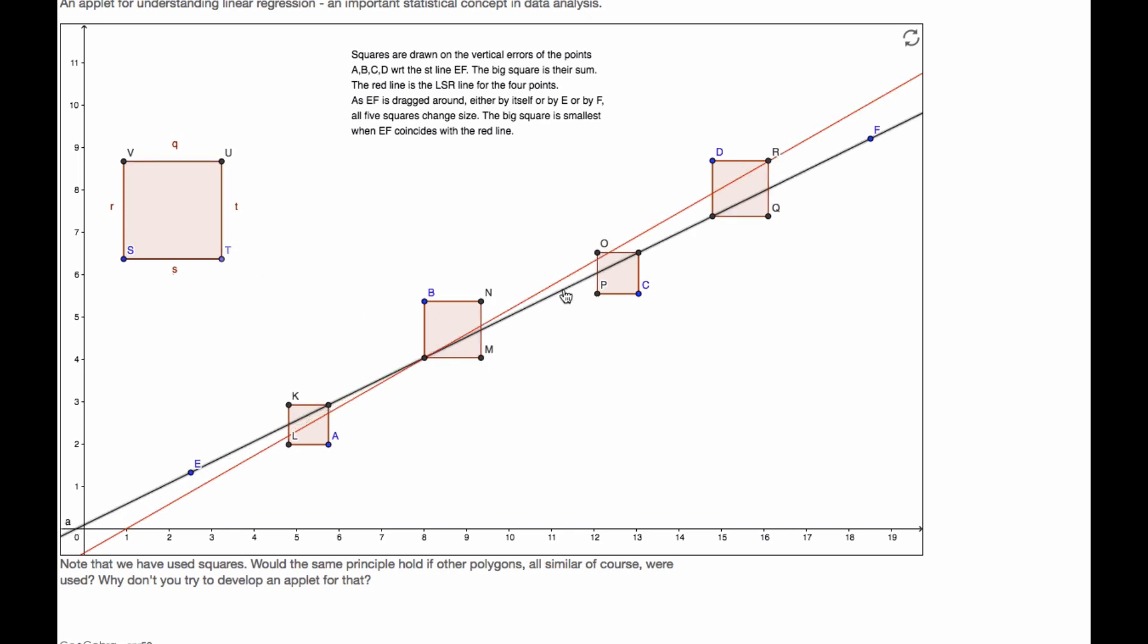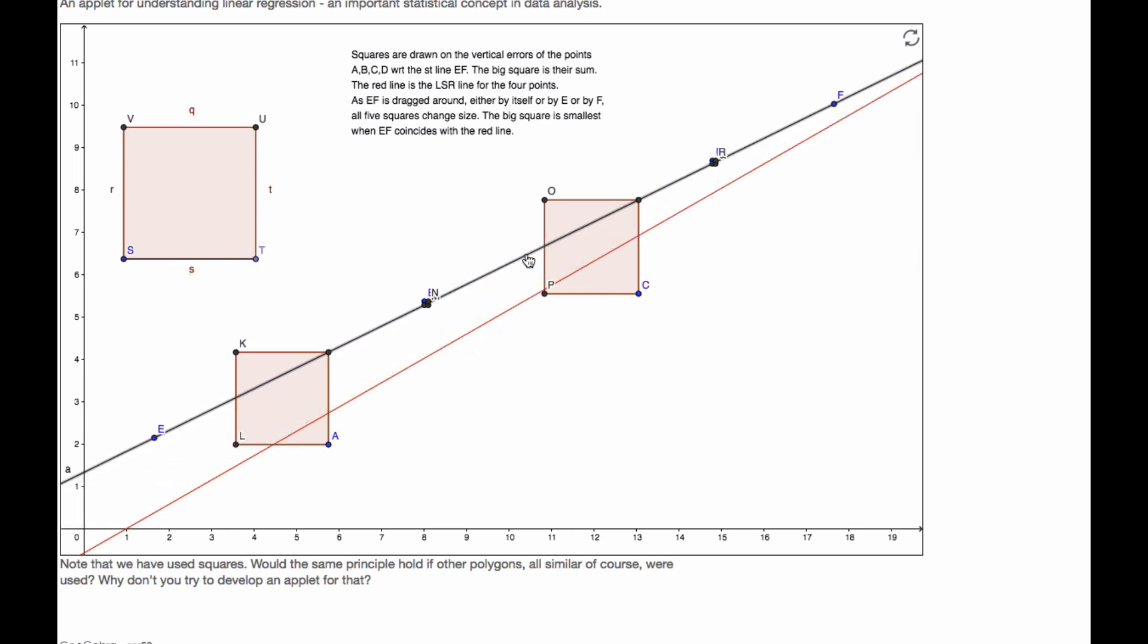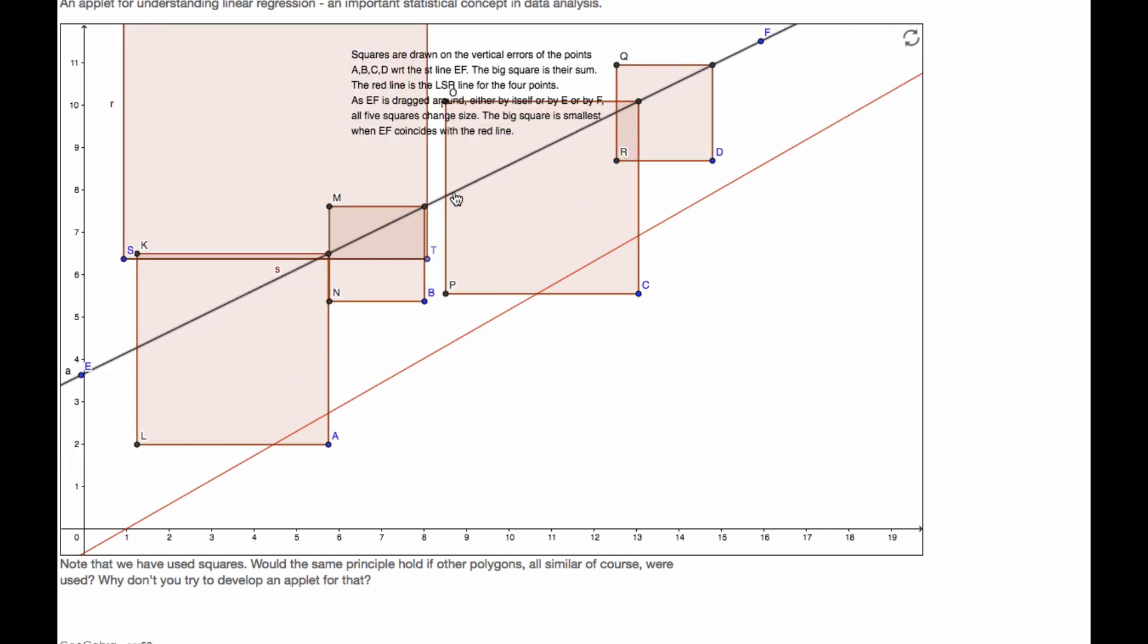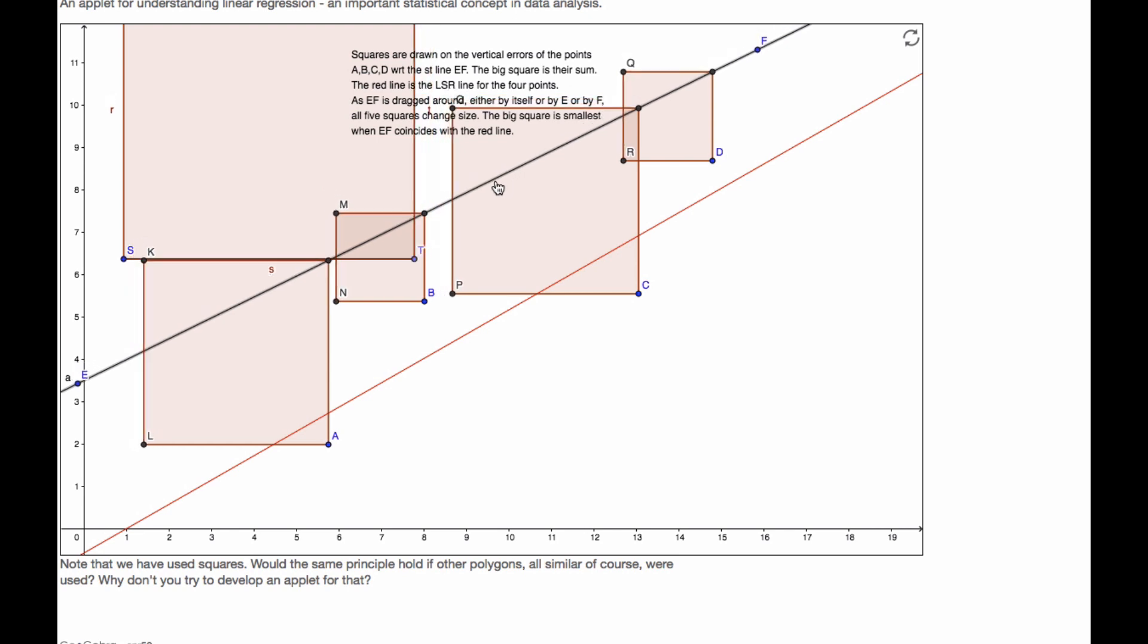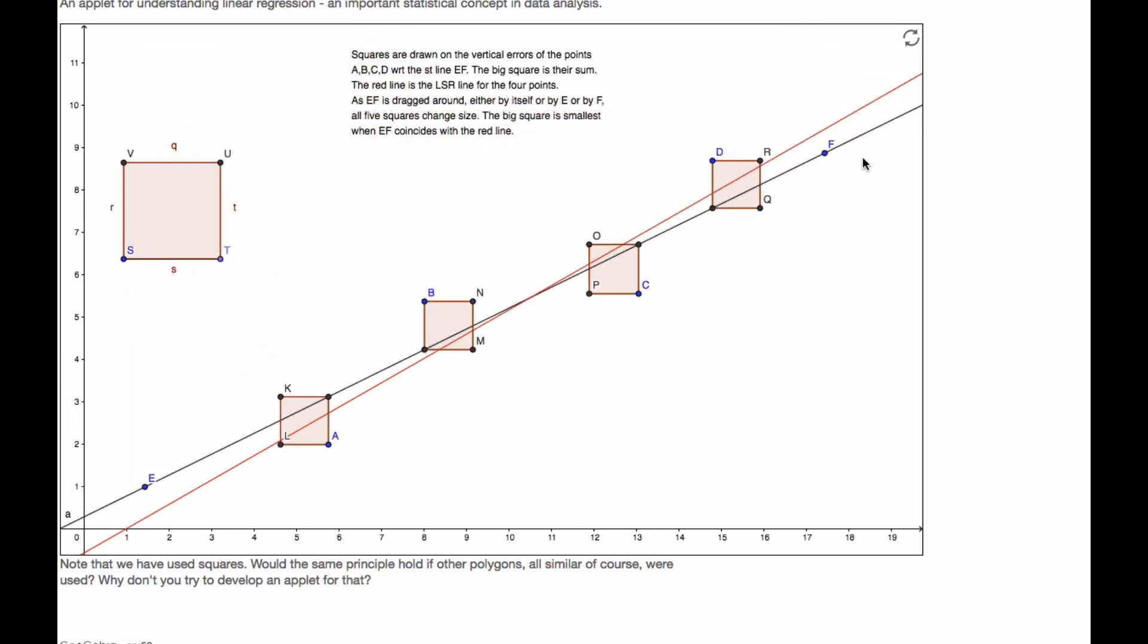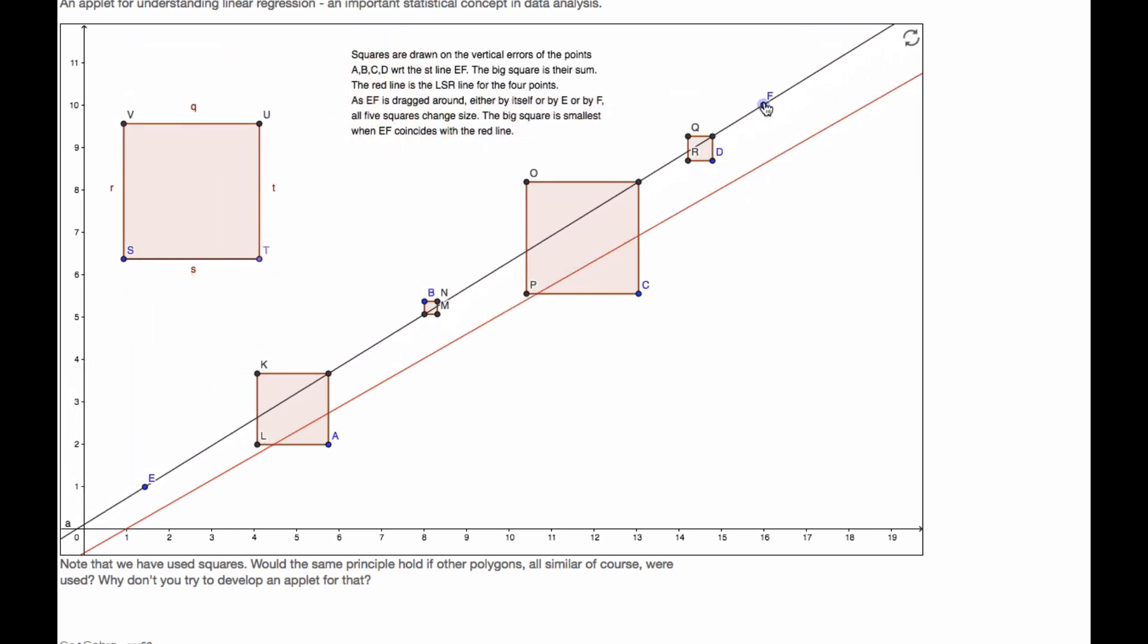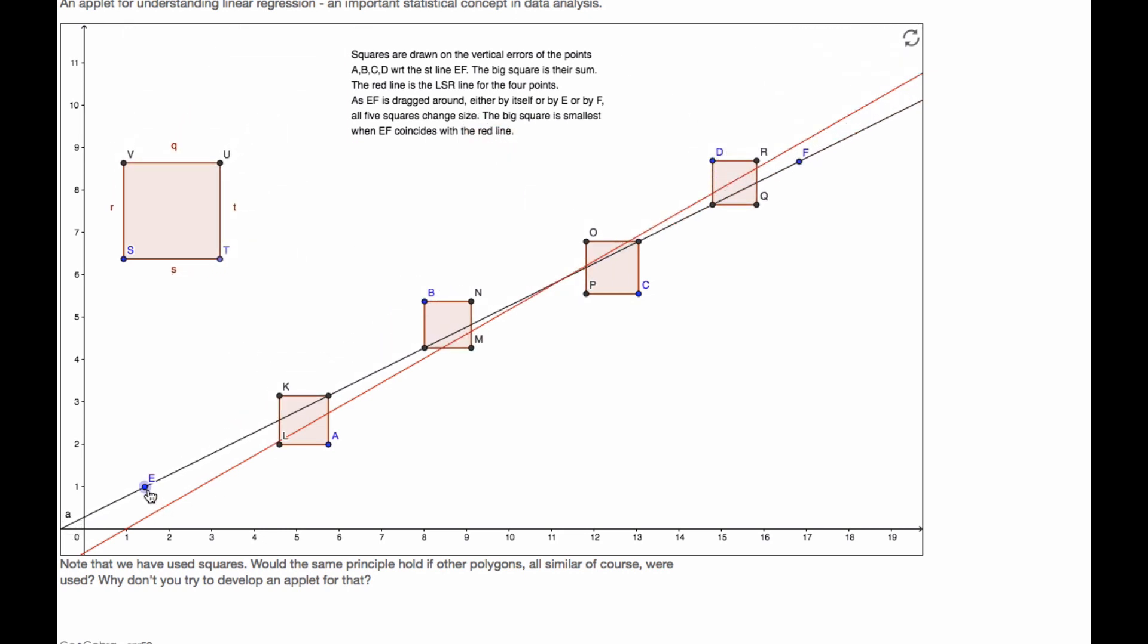So if I take just the line here and I move it, the squares change sizes. And you can see that that would be a very bad line of fit. So I can move it back, and I can play with just this end as well. The total area gets bigger. I can move this one down, and so I'm trying to get this area to be as small as possible.